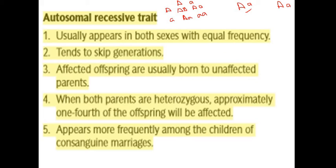When both parents are heterozygous — meaning each has one dominant and one recessive allele — then using a Punnett square we can see that only one out of four children carries both recessive alleles and shows the disorder. So for carrier parents, only one fourth of their children will show the disease. Also, in cases of closely related marriages between cousins, autosomal recessive traits can be observed.